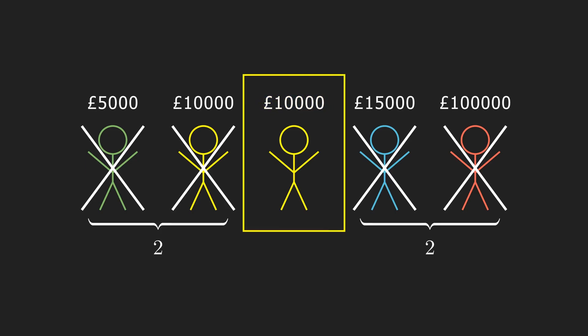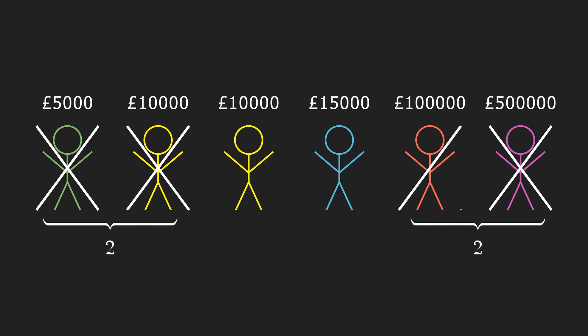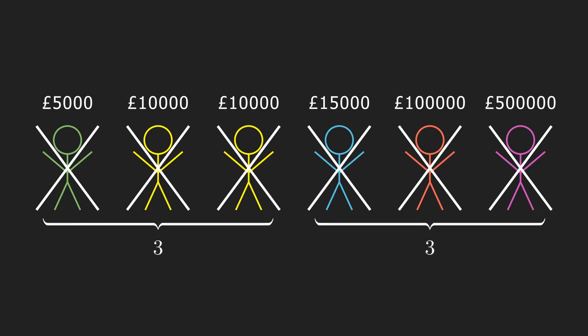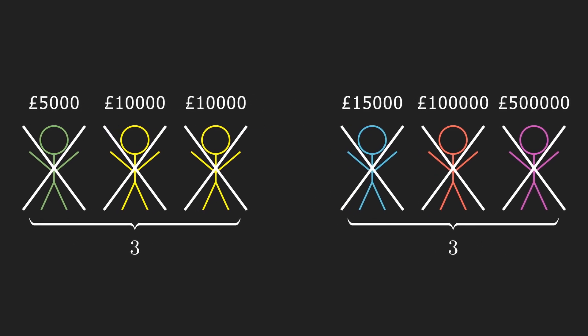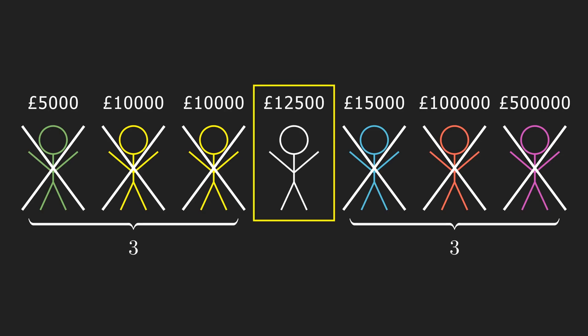This works great for data sets with an odd number of points, but things become more difficult when you have an even number of points. As you can see, you actually end up crossing off all your data points. Luckily, this is quite easy to fix — we simply create a new data point that's halfway between our middle two points. So in this case, the average is £12,500.